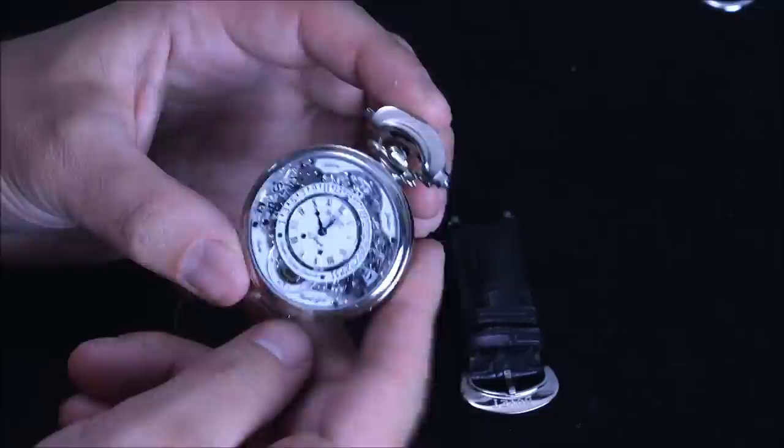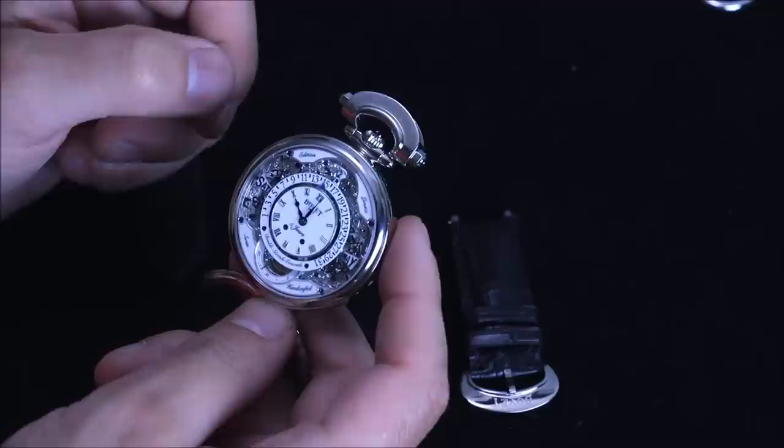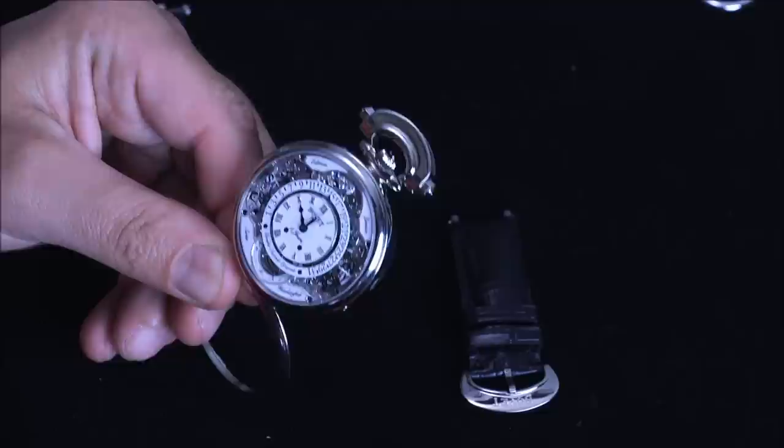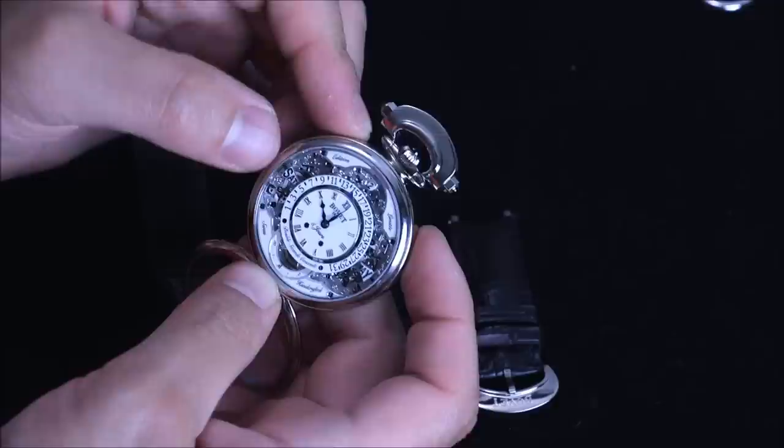On this side, you have the time in the center, and then you have a perpetual calendar with a retrograde date indicator. Another name for this watch is the Bovet Amadeo Fleurier Retrograde Perpetual Calendar Virtuoso 7. Let's talk for a second about how this perpetual calendar works. It's quite interesting. You have a semi-skeletonized dial.